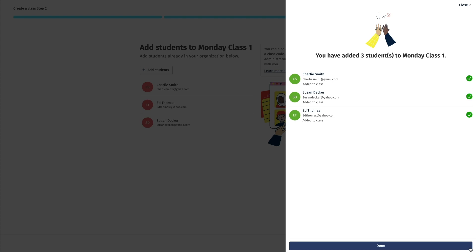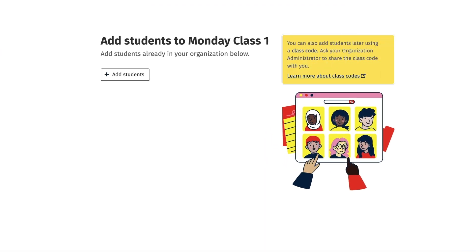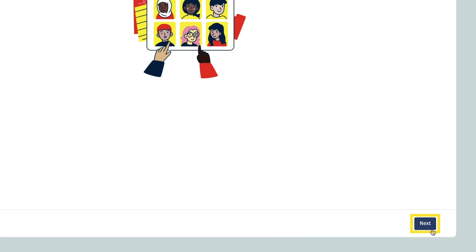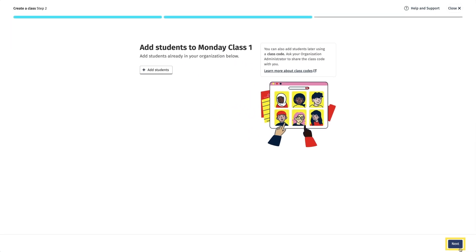Or, if you want students to join the class themselves, you can use the class joining code. But only the administrators have access to these codes, so you will need to ask them to send it to you, so you can send it on to your students. You can skip this step and add students later by clicking the Next button if there isn't a list of students to select from, or if you need to ask the administrator for the class joining code to pass on to your students.